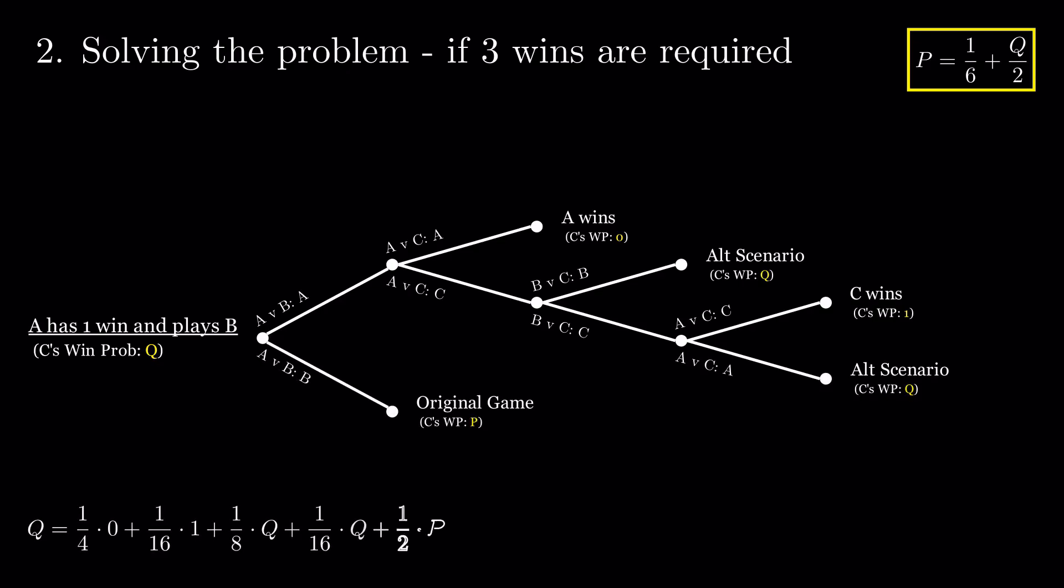Following a similar logic to before, we get another equation between P and Q. So, putting the two together, we get that P equals 8 over 27.